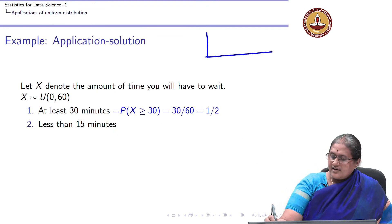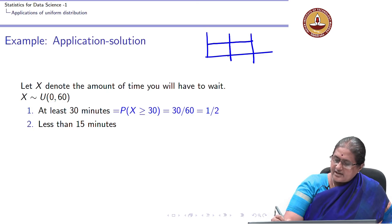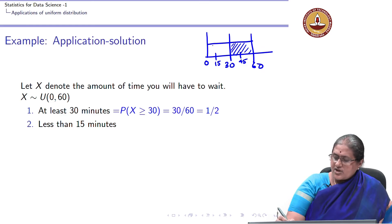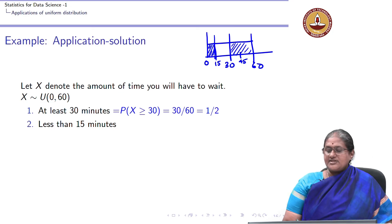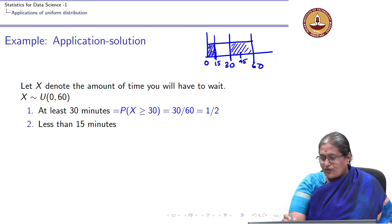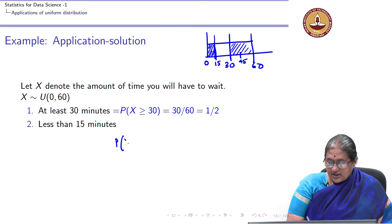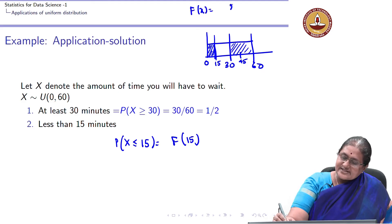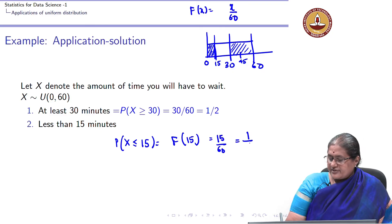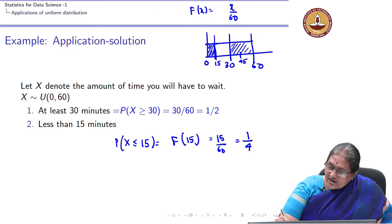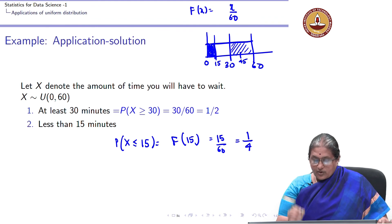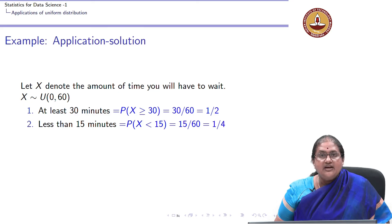For less than 15 minutes, P(X ≤ 15) = F(15) = 15/60 = 1/4. If the area of the entire rectangle is 1, the shaded blue region is 1/4, meaning there is a 25 percent chance you wait less than 15 minutes.